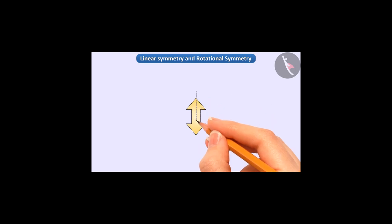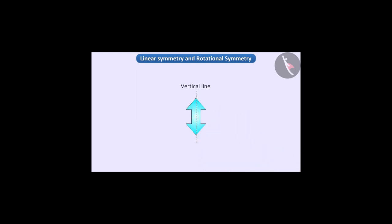Look at this figure. Can you tell whether this shape is symmetric or not? If we draw a vertical line from the centre of this shape, then this line divides the shape into two equal parts that are mirror reflections of each other.